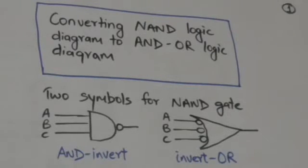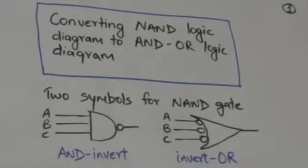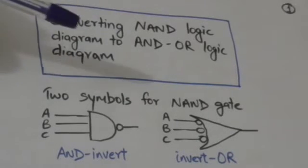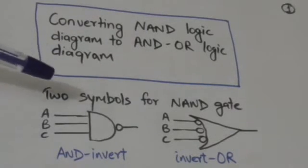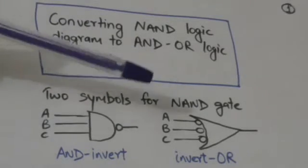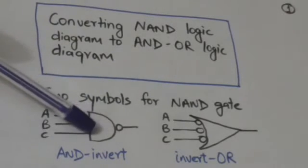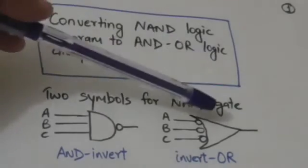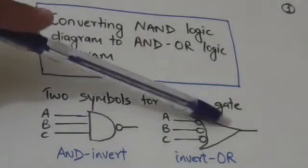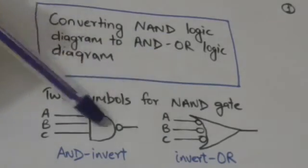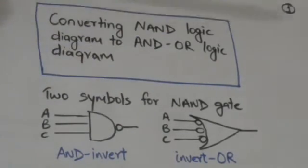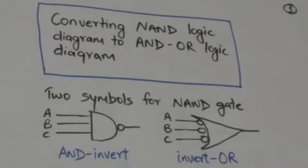Hello friends, welcome back. In this tutorial we will learn how we can convert a NAND logic diagram to an AND-OR logic diagram. First of all, I would like to repeat that there are two symbols of NAND gate: one is AND-invert, another is invert-OR. These two gates are equivalent — they both perform the NAND operation.